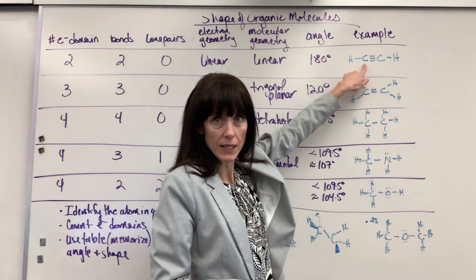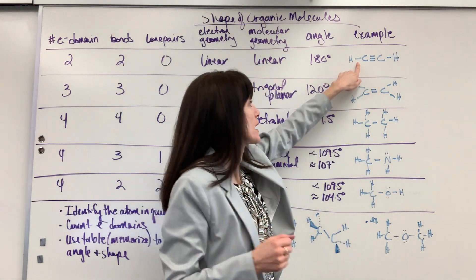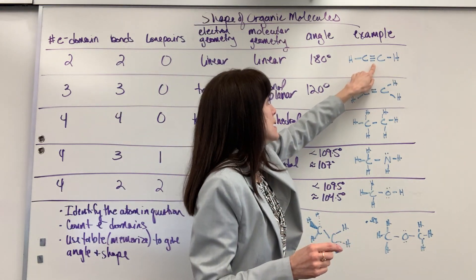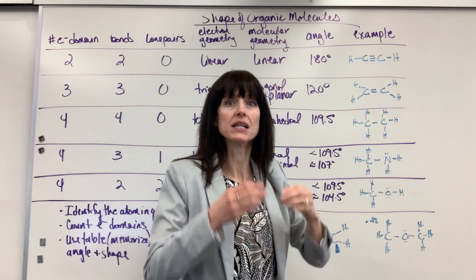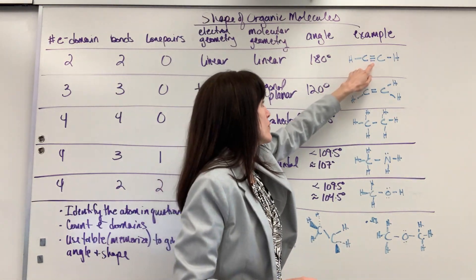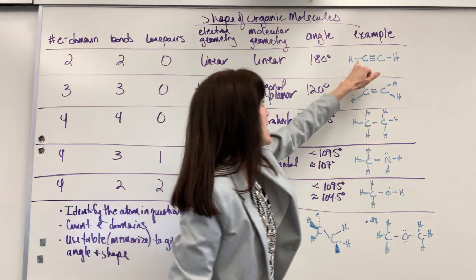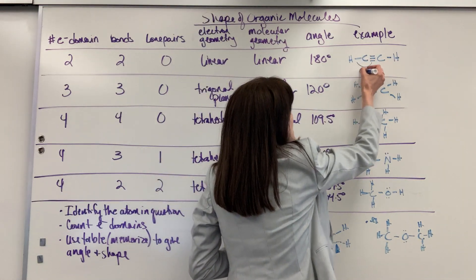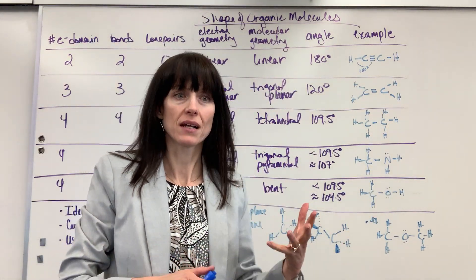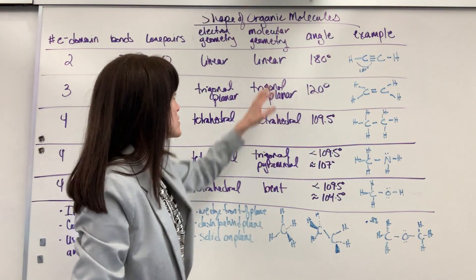So if I'm looking at this carbon right here, it has two electron domains. There's one area where electrons exist in that single bond between the carbon and the hydrogen, and then one area where electrons exist between the two carbons. Even though there are six electrons there, they're still consolidated in one area — so this is considered two total electron domains. If we've got two electron domains, that angle is going to be 180 degrees. At 180 degrees, the molecule looks straight, so we call that linear.